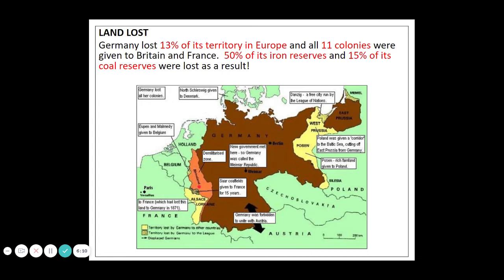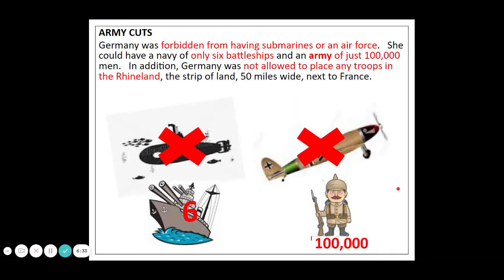These are the areas that cause problems. We've also got the loss of the German port of Danzig, separated by what's called the Polish Corridor. Germany is quite significantly dismembered at this point, which creates a lot of anger and resentment. We've also got army cuts — Germany was forbidden from having submarines or an air force, only six battleships in the Navy, an army of 100,000 men. Germany was not allowed to place any troops in the Rhineland, that demilitarised strip 50 miles wide running next to France.